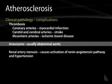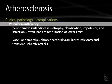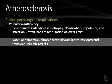Aneurysms can also develop, which usually occur in the abdominal aorta. Renal artery stenosis can develop, which causes activation of the renin-angiotensin pathway and can lead to secondary hypertension. Vascular insufficiency — or peripheral vascular disease — can develop, where you get atrophy, claudication, impotence, infection, and often leads to ischemia and ultimately cell death in the lower limbs, leading to amputation. Vascular dementia, chronic cerebrovascular insufficiency, and TIAs can develop as well.